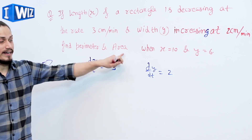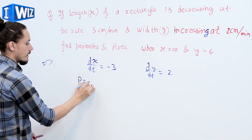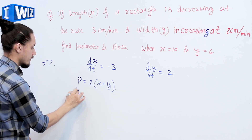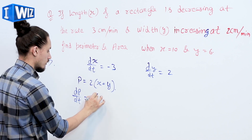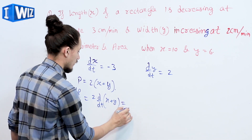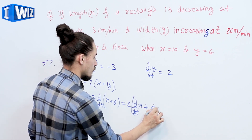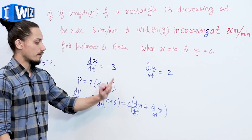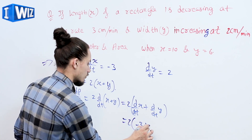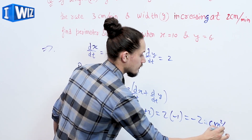We have to find the perimeter and area of this rectangle at x equals 10 and y equals 6. Perimeter P equals 2 times (length plus breadth), so the rate of change of perimeter is dP/dt equals 2 times d/dt of (x plus y). We know dx/dt equals minus 3 and dy/dt equals 2, so we get 2 times (minus 3 plus 2) equals 2 times minus 1, which equals minus 2 centimeters per minute.